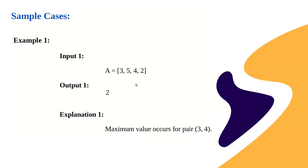Let's look at this example. Suppose A is the given array which is [3, 5, 4, 2]. The output to be returned is 2. If we look at elements three and five, the rightmost element is greater than the left, so j minus i is one minus zero which is one.